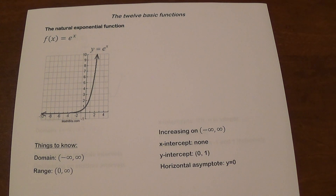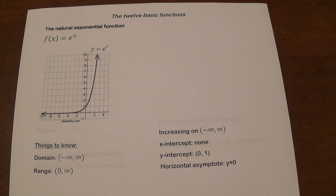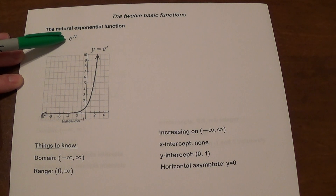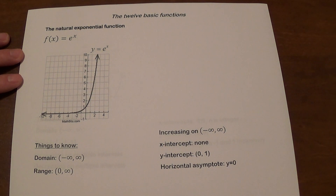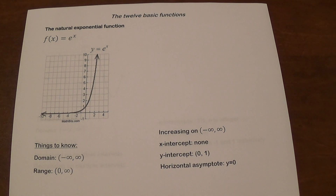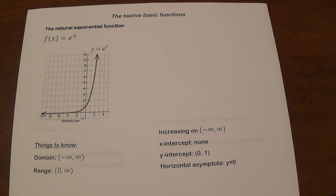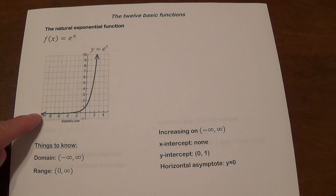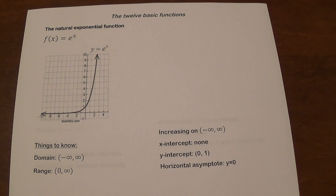The natural exponential function, f of x equals e to the x. The domain is all real numbers, from negative infinity to infinity. The range is from 0 to infinity because this value will never be 0 or negative. This function is increasing on its entire domain. It has no x-intercepts, but has a y-intercept at (0, 1). It has a horizontal asymptote at y equals 0, as the graph approaches the x-axis toward negative infinity but never crosses it.